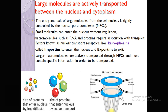The entry and exit of large molecules from the nucleus is tightly controlled by the nuclear pore complex. Small molecules can enter the nucleus without any regulation, protein, or energy. Macromolecules such as RNA, RNA polymerase, and DNA polymerase mainly require association with a transport factor known as the nuclear transport receptor or NTR, such as karyopherins — a protein family.